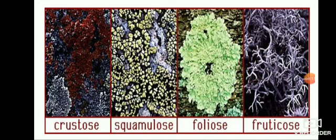Coming to the types of Lichens, they are of different types: crustose, squamelose, foliose, and fruticose. Crustose Lichens are crust-like, closely attached to the substratum — examples are Graphis and Lichenora. Squamelose, also called leprose, are like minute scales attached superficially to the substratum — example is Lepraria.